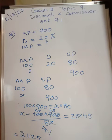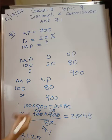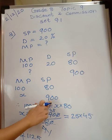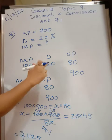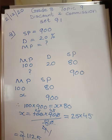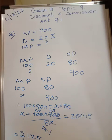So the tag was of rupees 1125 and they sold it for 900 rupees because 20 percent was discount. Have you understood? Now let's go to the fourth problem.